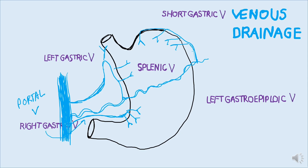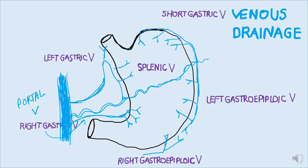Similarly, the left gastro-epiploic veins, which drain the middle portion of the greater curvature (the body of the stomach), drain into the splenic vein and eventually into the portal circulation. For the lower portion of the greater curvature — this is important and different from the others — the right gastro-epiploic vein drains not into the portal vein directly, but into the superior mesenteric vein.